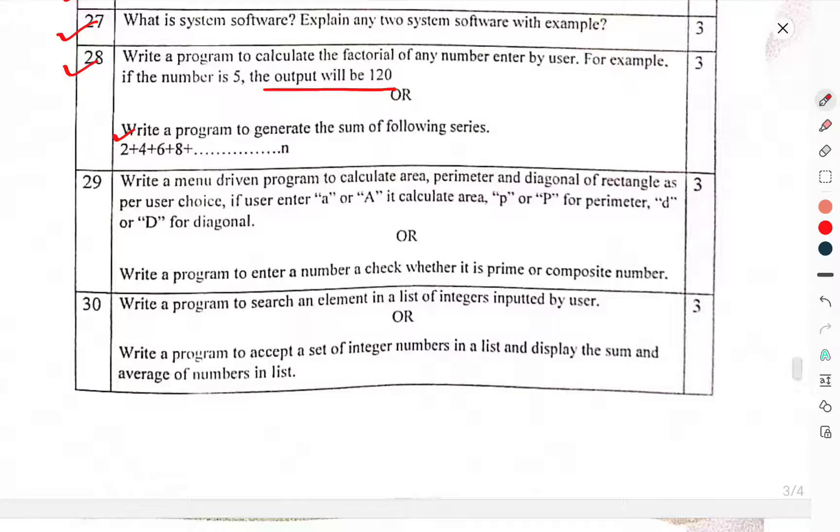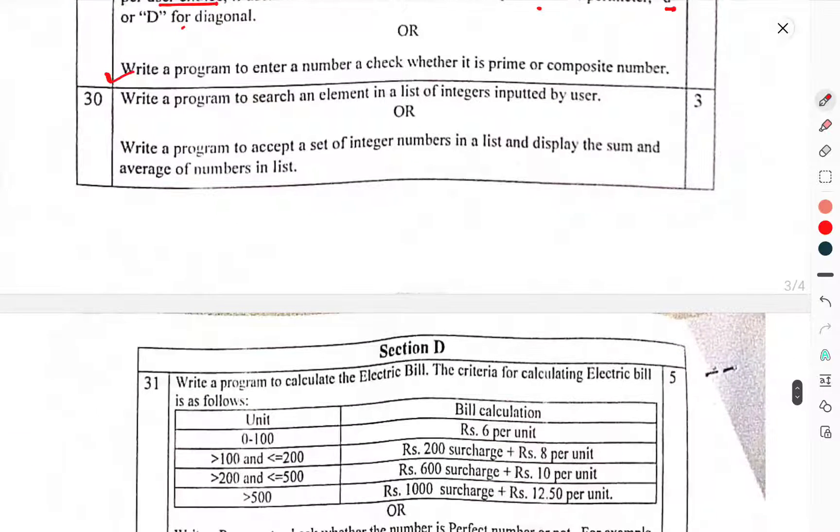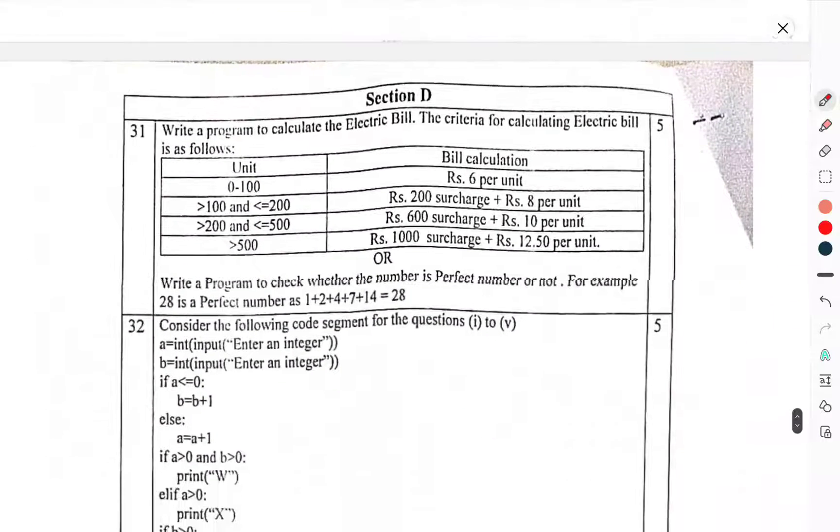Question 29: Write a menu-driven program to calculate area, perimeter, and diagonal of a rectangle as per user choice. If user enters A or capital A, calculate area. P or capital P for perimeter, and D or small d or capital D for diagonal. Write a program to enter a number and check whether it is prime or composite number. Question 30: Write a program to search an element in a list of integers inputted by user. Or, write a program to accept a set of integer numbers in a list and display the sum and average of numbers in the list.